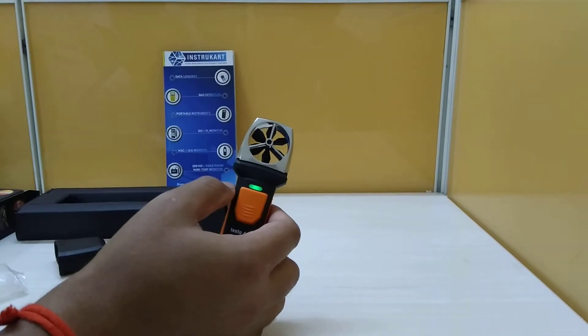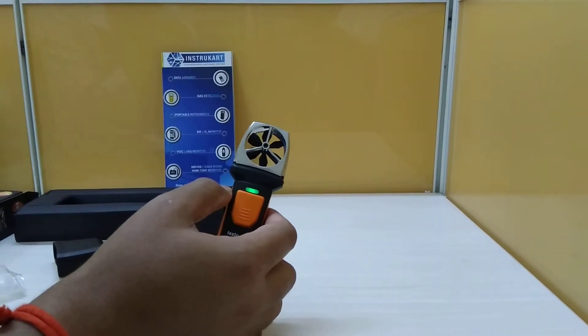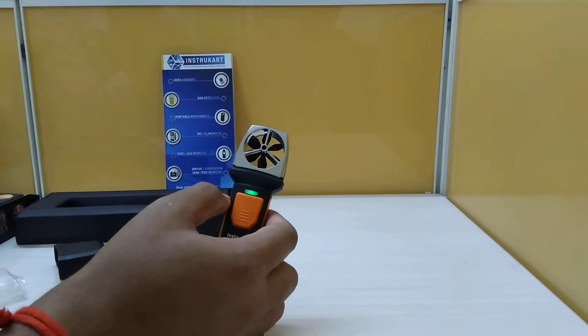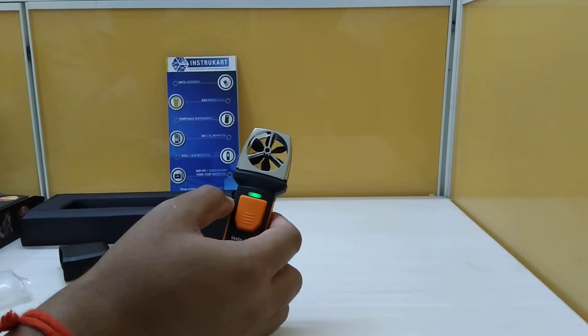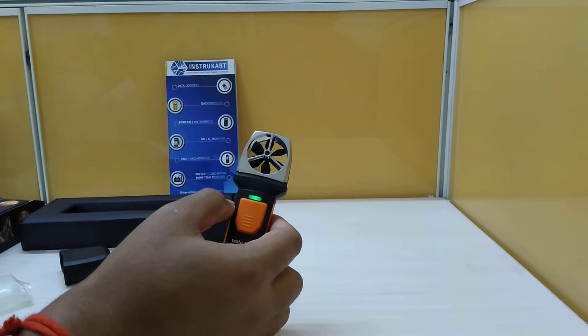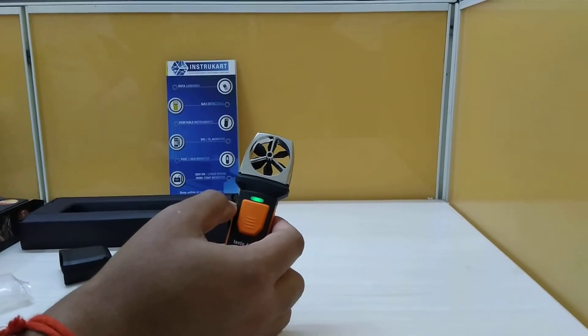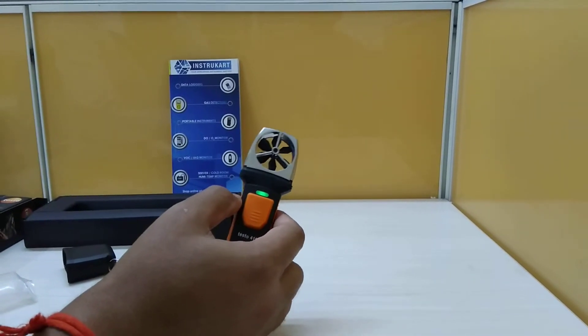Since it has a temperature sensor, it has a range of minus 20 to plus 60 degrees Celsius, with an accuracy of plus or minus 0.5 degrees Celsius and a resolution of 0.1 degrees Celsius.